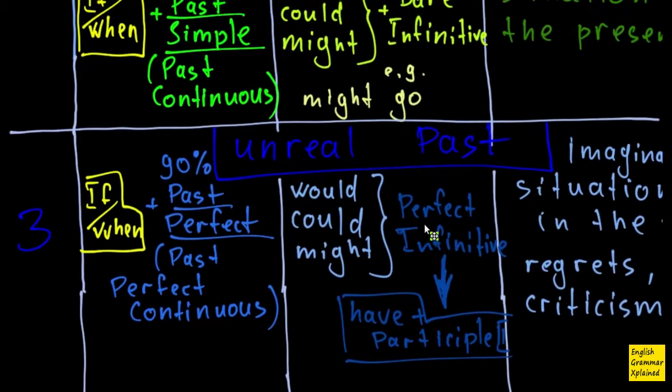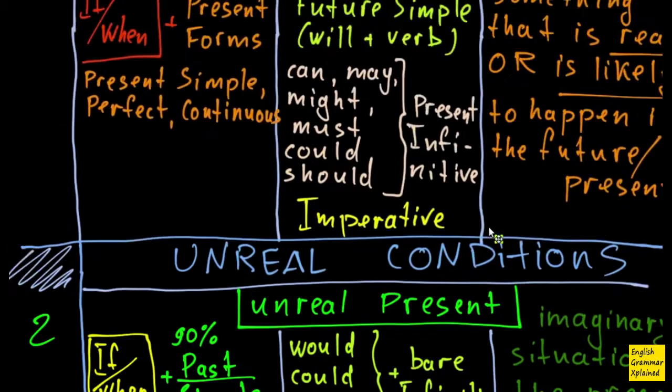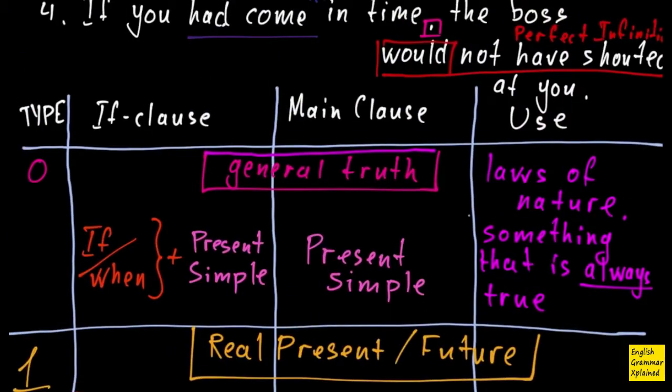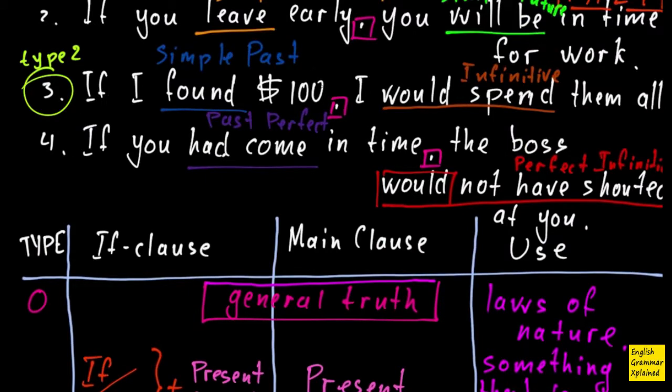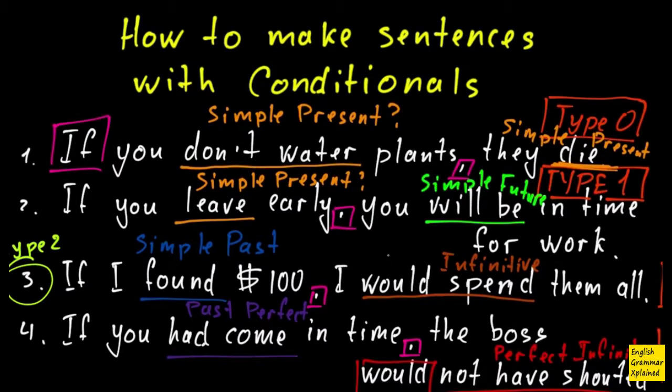Well, and that's all about types of conditionals. Of course, there are a lot of interesting things about it. And all these conditionals can mix together, except type zero. It doesn't mix with anything. You can mix type two and type three, and use, for example, if-clause from type two and main clause from type three. That's very, very tricky, but it's very, very useful, believe me. So it's all for now. Thanks for watching. Feel free to subscribe, to like or dislike, to share or whatever. Thanks for watching again, and see you in the next video.